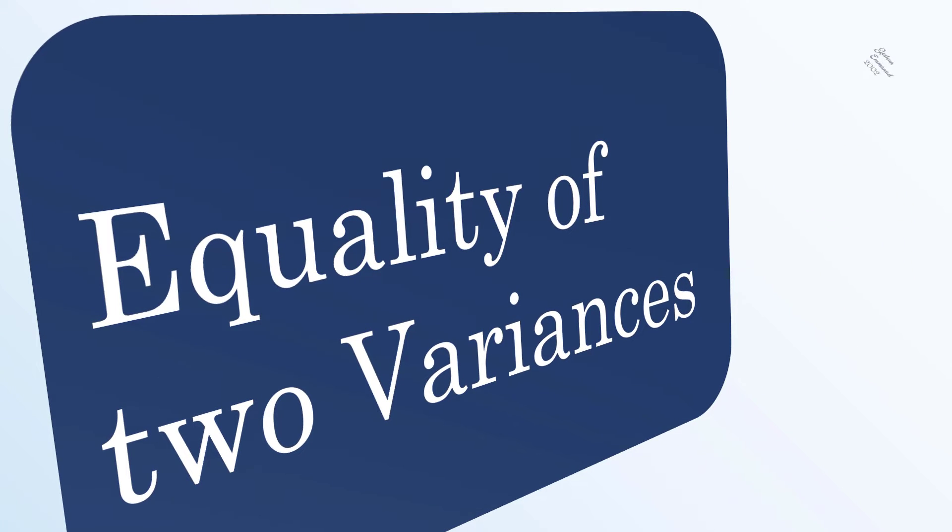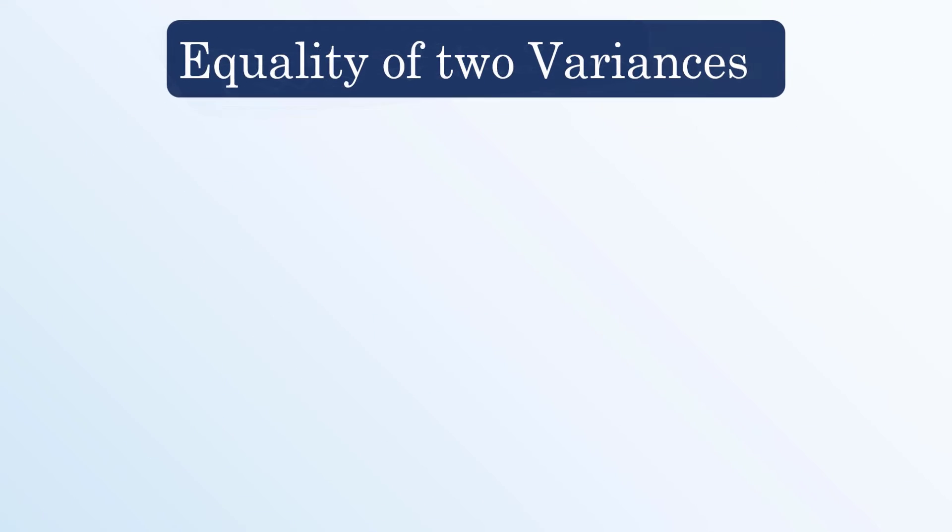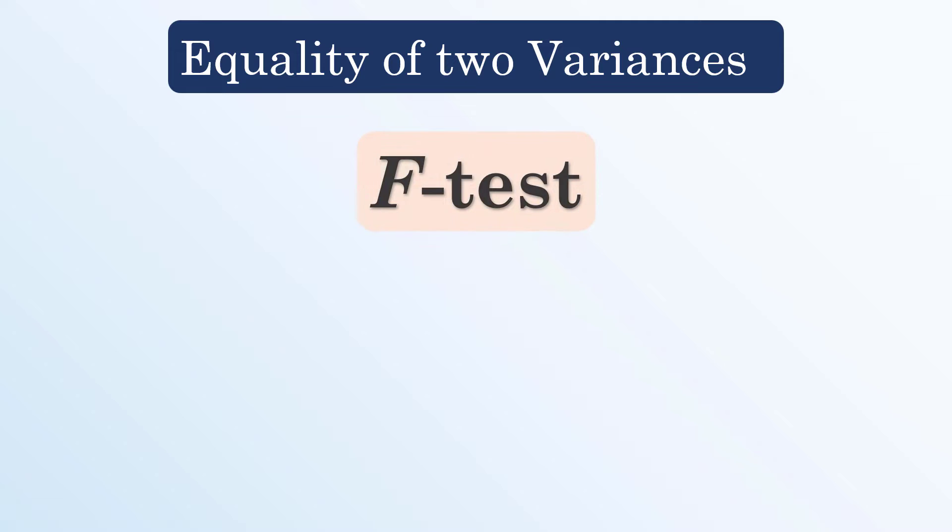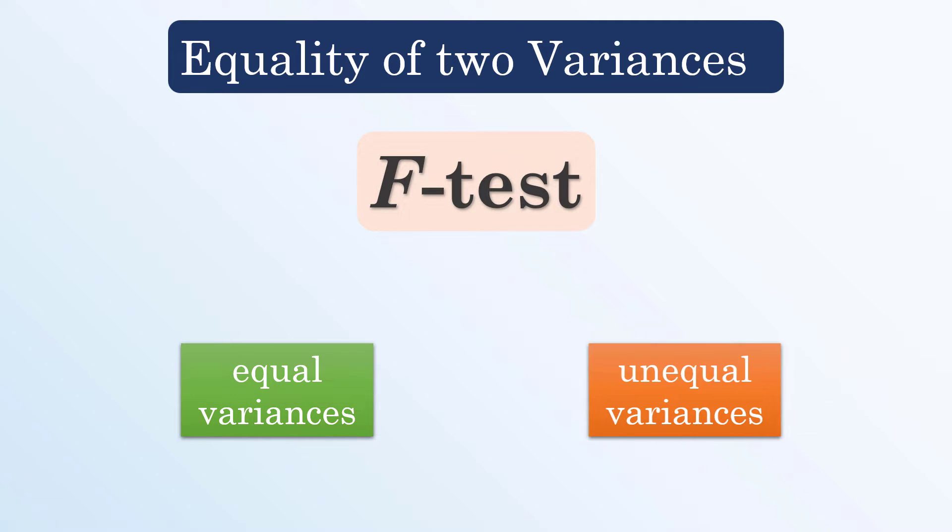To test the equality of two population variances, we often perform an F-test, which we also use to decide whether to conduct an equal or unequal variances independent t-test.